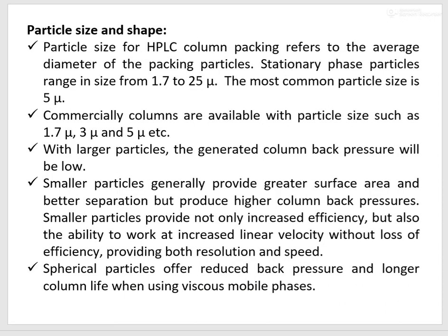The next important parameter is particle size and shape of the stationary phase. Particle size for HPLC column packing refers to the average diameter of packing particles — that is, the average diameter of the stationary phase. Stationary phase particles range from 1.7 micron to 25 micron, but the most common particle size is 5 micron. Commercially available columns come with particle sizes such as 1.7 micron, 3 micron, and 5 micron. With large particle size, the generated column back pressure will be low, because small particles form a compact mass and produce high back pressure.